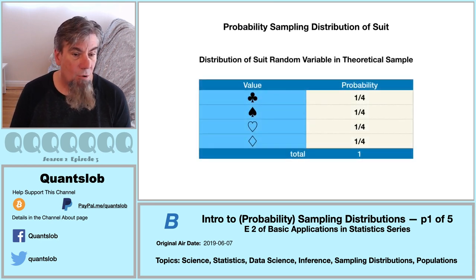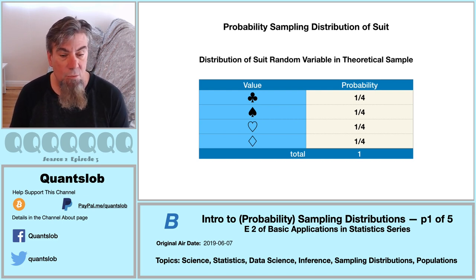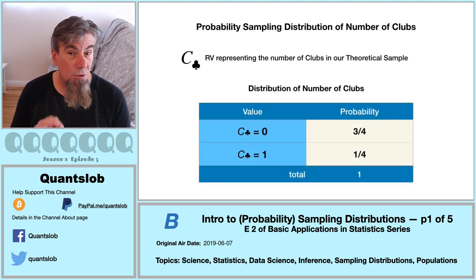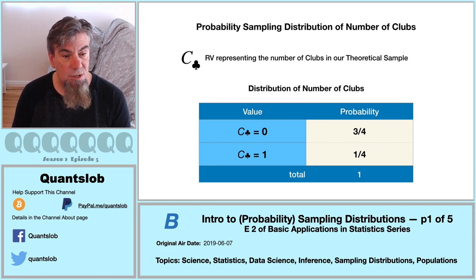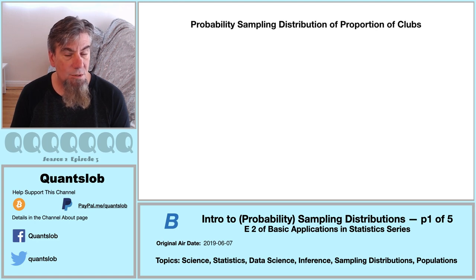Here is the probability sampling distribution of our suit value in our theoretical random sample of size one — sort of where we left off in our foundational series finale. What comes next involves a bit of a leap. We're going to transform the sampling distribution into something of more direct practical value: a sample statistic — namely the number of cards suited as clubs in this theoretical random sample of size one. RV here stands for random variable.